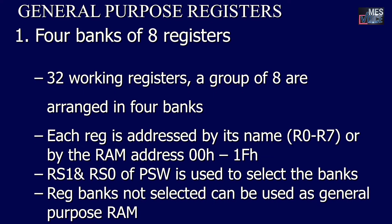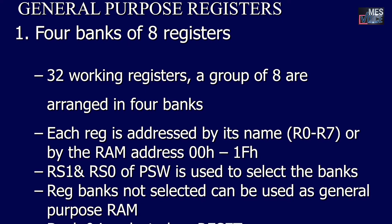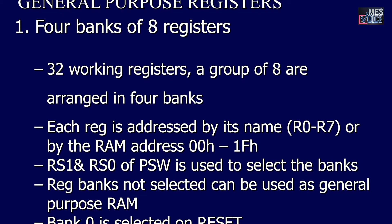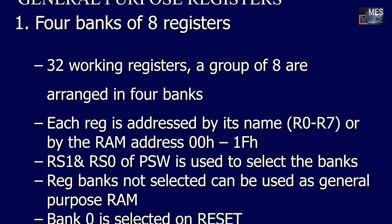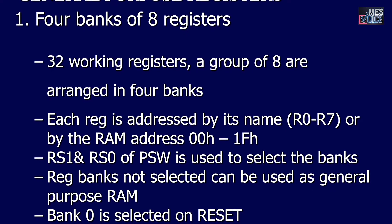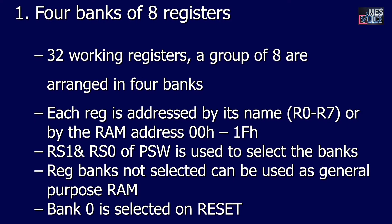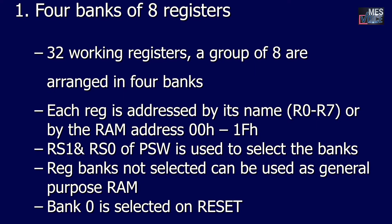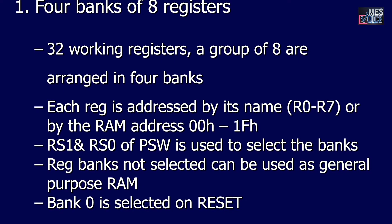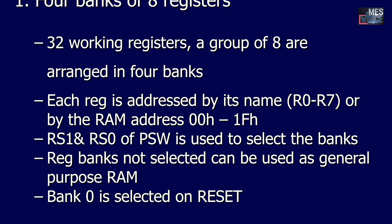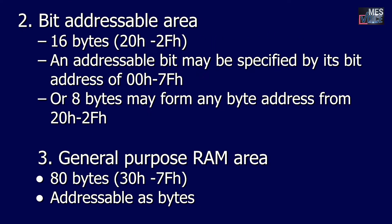General purpose registers: four banks of eight registers — 32 working registers — are grouped into eight and arranged in four banks. Each register is addressed by its name R0 to R7 or by the RAM address 00H to 1FH. RS1 and RS0 of the program status word are used to select the banks. Register banks not selected can be used as general purpose RAM. By default, bank 0 is always selected.